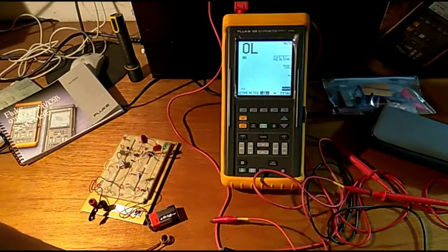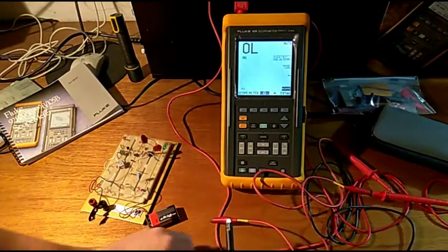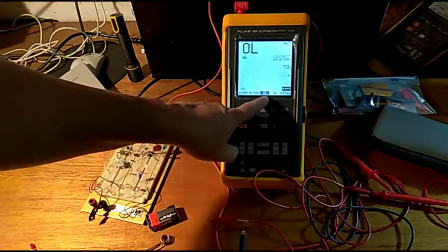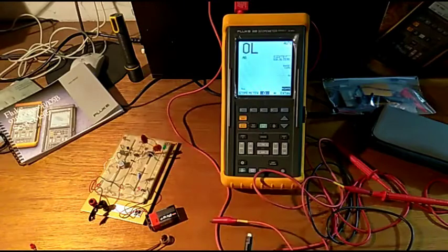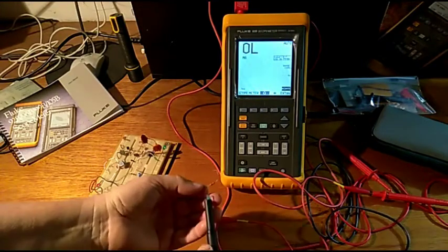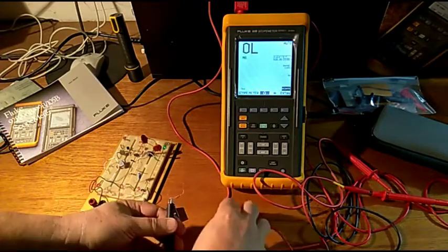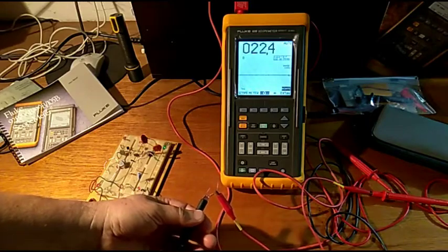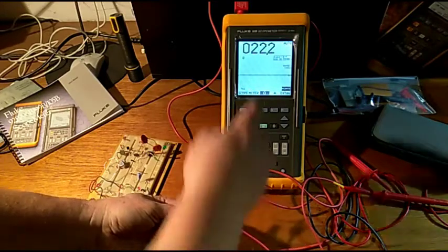Now we'll test the resistance meter. We're in ohm mode on the Fluke 92B. Let's pick up a resistor here. It's red red black, so that should be 22 times 10 to the zero, or 22 ohms. Let's see what it measures. Approximately 22.1 ohms. The resistance meter is working.